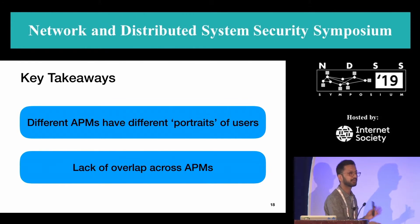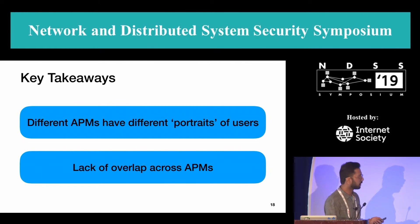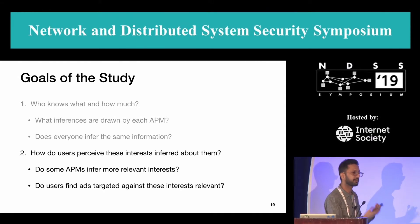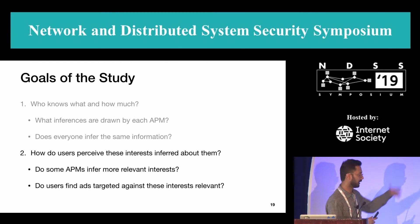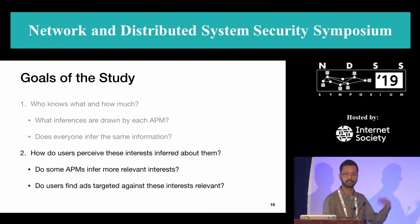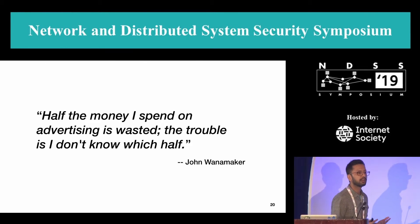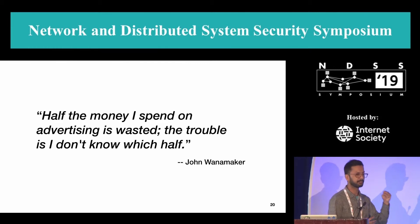This brings us to our next question: they have different portraits, but does that mean someone has better or more relevant information about you? To answer that, we look at how users perceive the interests inferred about them — specifically, do some APMs infer more relevant interests, and do users find ads targeted against these interests relevant? This is motivated by the classic quote: 'Half the money I spent on advertising is wasted; the trouble is I don't know which half.' Targeted advertising was meant to address this — if you can infer more relevant information, you can reduce wasted ad spend.